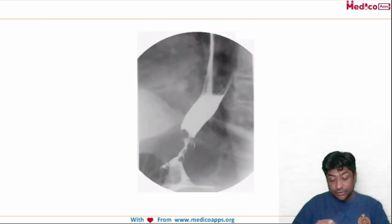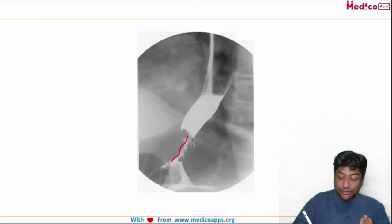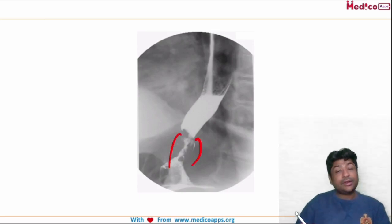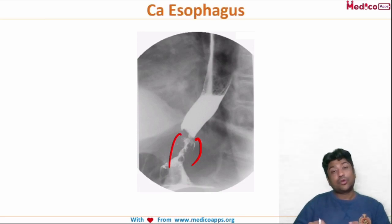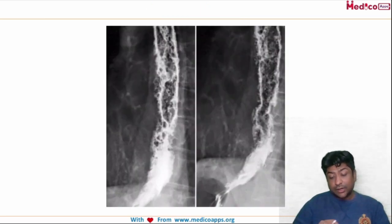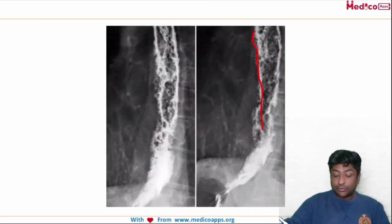When a patient comes with dysphagia you may think of carcinoma esophagus. Looking at this slide, you can see narrowing of the distal part of the esophagus, but here you can clearly see irregular filling defects. So this is a barium swallow image of carcinoma esophagus.